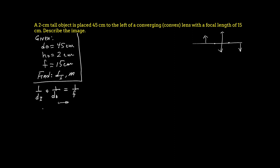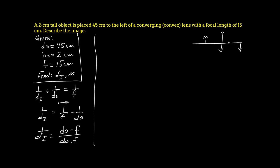We bring do over: 1/di = 1/f − 1/do. Getting a common denominator by cross-multiplying gives us 1/di = (do − f) / (do × f). Flipping both sides, di = (do × f) / (do − f). Now plugging in: di = (45 × 15) / (45 − 15). Don't multiply yet because things will simplify.